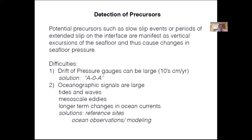Difficulties with using pressure gauges for this purpose include drift, which can be tens of centimeters per year — though we seem to have a solution now called A0A. The much bigger problem is that oceanographic signals are large. If you're trying to see a change in seafloor depth and the sea surface is moving up and down, that gives a signal obscuring the depth changes. Big oceanographic signals include tides, waves, mesoscale eddies, and long-term changes in ocean currents. We're looking at solutions including reference sites, ocean modeling, and improved oceanographic observations.